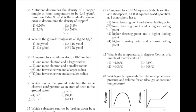What is the temperature in degrees Celsius of a sample of matter at 35 K? The equation is K = °C + 273. So 35 K = C + 273, meaning 35 − 273 = −238°C — answer choice 1.